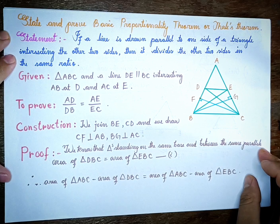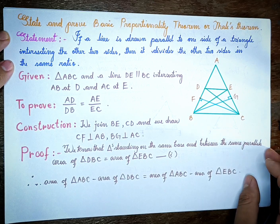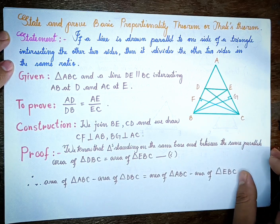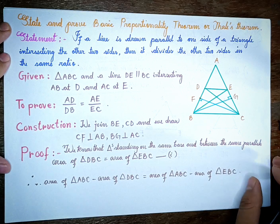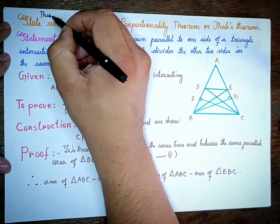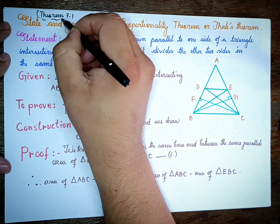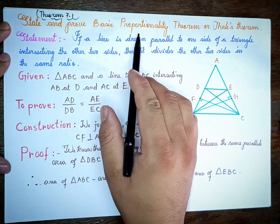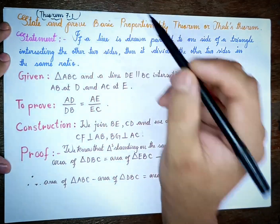Welcome to Theorem 7.1, which carries 6 marks. Today I am going to read Theorem 7.1. The question is to state and prove the Basic Proportionality Theorem. Theorem 7.1 is the Basic Proportionality Theorem.